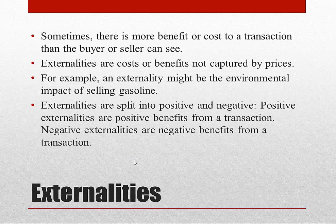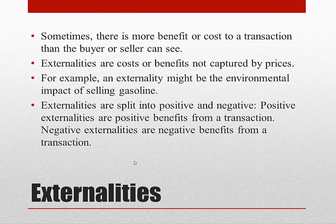An important concept to know for this chapter is that sometimes transactions don't include all of the benefits or costs related to the price of the transaction. These benefits and costs are called externalities. An example of an externality is the environmental impact of using gasoline. The price of a barrel only reflects the cost required to make it, not the damage it causes to the environment. This is an example of a negative externality, a negative benefit from a transaction. A positive externality is a positive benefit from a transaction, such as saving the environment when using solar panels.